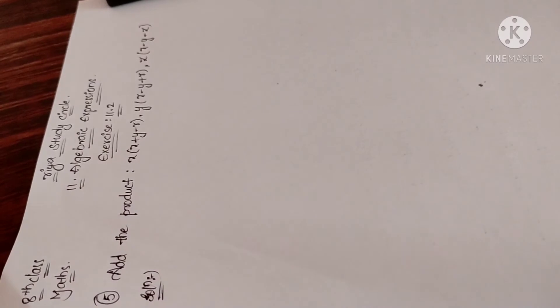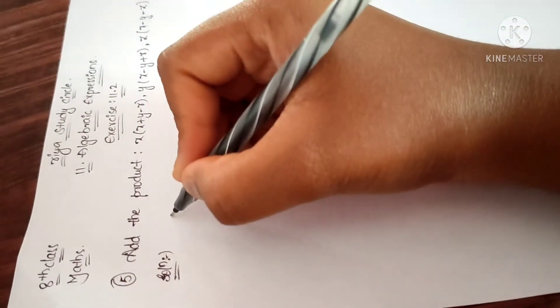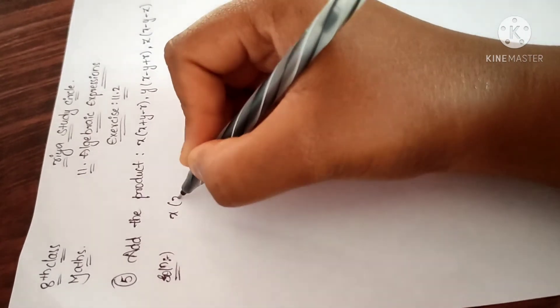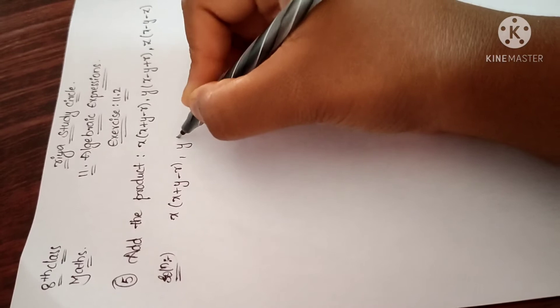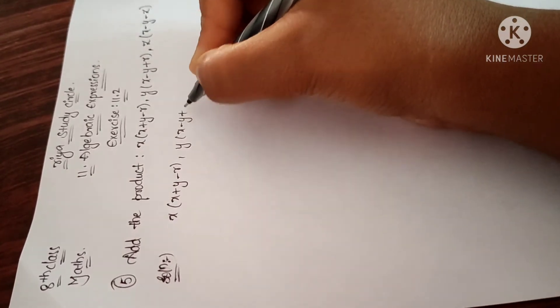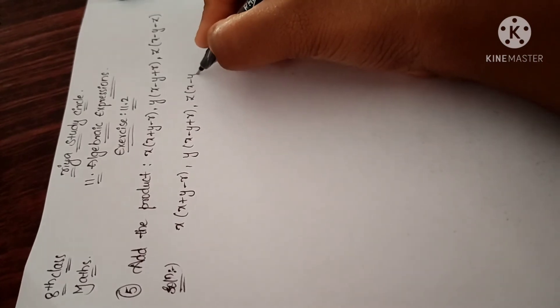Solution for this problem is they gave x into x plus y minus r, comma, y into x minus y plus r, comma, z into x minus y minus z. So we have to add this product.